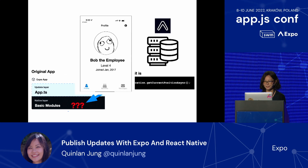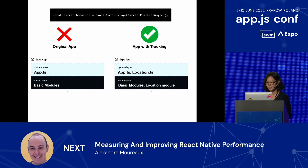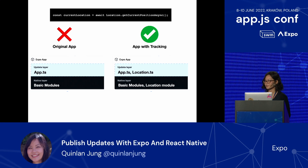The main takeaway is that not all updates are compatible with all runtimes. Our green dot update was only compatible with the tracking app, not the original app, because of the difference in the native layers — one has the native location module and the other does not. Because there is a difference at the native layer, we say they have different runtimes.